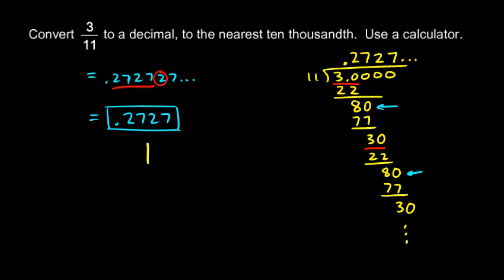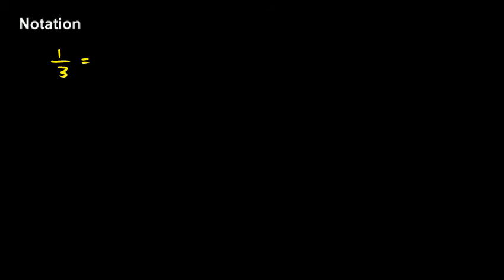Rounded to the nearest ten thousandth, it's .2727. Now I want to make a couple of comments about notation — you should understand the notation for repeating decimals. Notation just means how we write it, how it's written down. One common notation is to write enough digits — two or three — and then put the dot dot dot. Those three dots indicate that the pattern repeats. So one third is .33..., and five ninths can be written as .55...